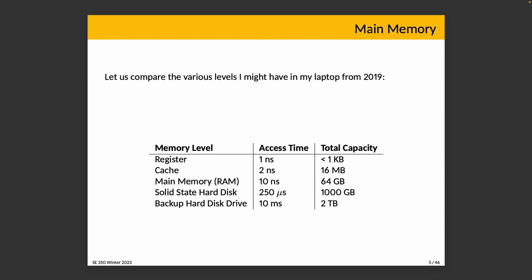It's noteworthy that cache itself is broken down into different levels: level one, level two, level three cache. In any case, the trend is clear — fast memory is expensive. As we get further away from the CPU, access gets slower but less expensive, so we can have more of it.